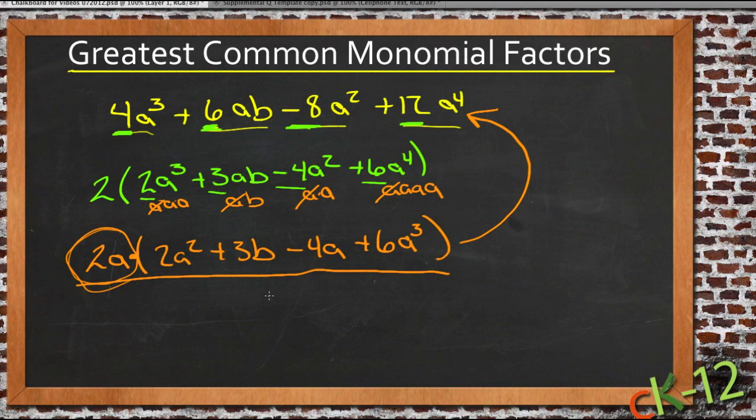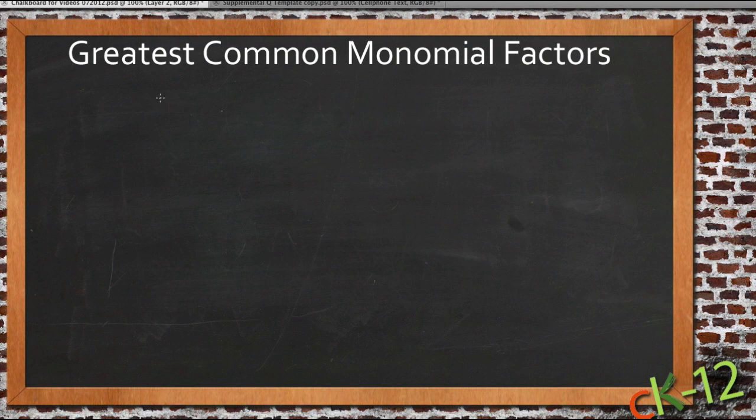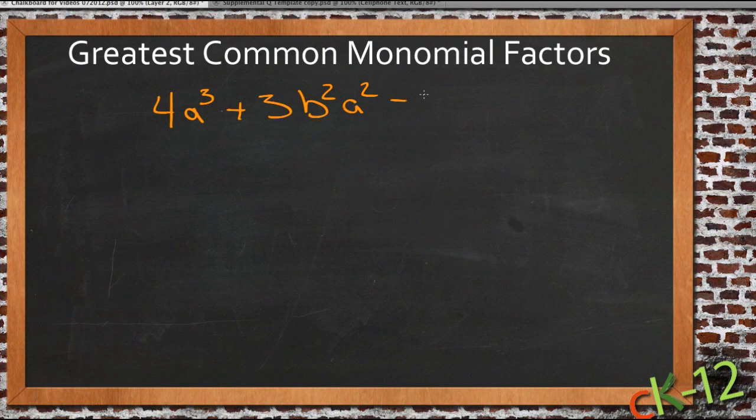Let's do one more example. Let's do 4a³ + 3b²a² - 7a²c⁵. Now all I have in common here, I don't have anything common with the three constant terms, the three coefficients. There isn't anything that I'll divide by.